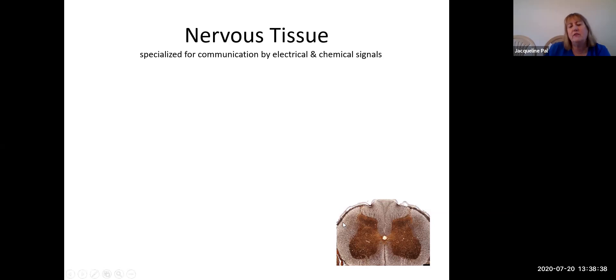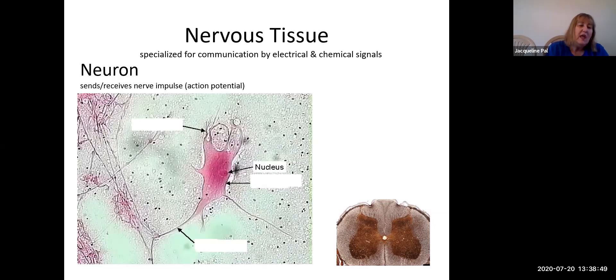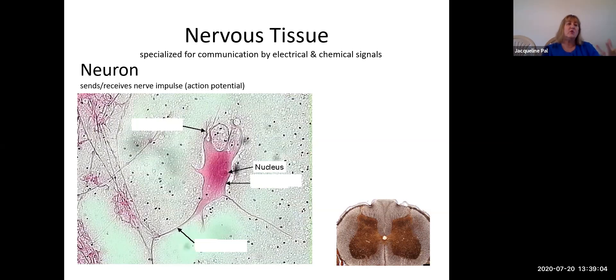Nervous tissue is specialized to communicate with itself and with other types of tissue by either voltages or chemical signals. And this is a picture of the spinal cord in cross section here just for me to remind you that nervous tissue is not only in the brain, it's also found in the spinal cord. So here's what it looks histologically. Do you see that big pink cell there? That big pink cell is the neuron, what you may have called a nerve cell before, but now you're going to call it a neuron.